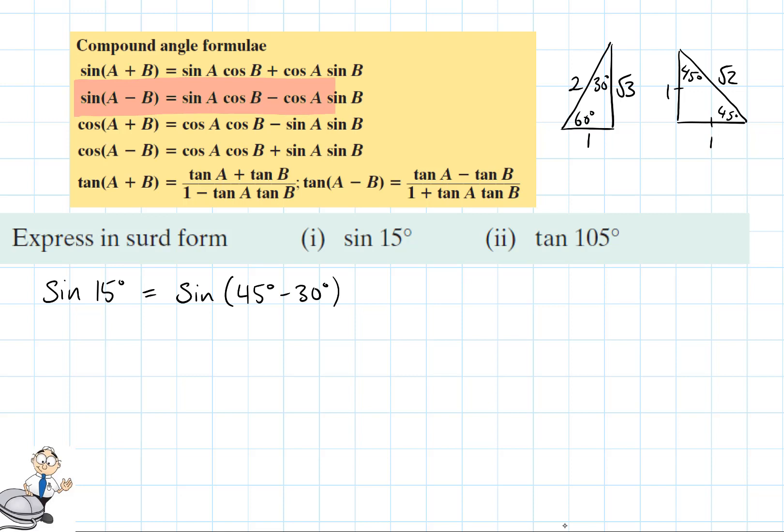Now if we look at our rules here we see we have a rule for working out the sine of A minus B. So in this case A is 45 degrees and B is 30 degrees. So using this formula we see that it's sine 45 cos 30 take cos 45 sine 30.